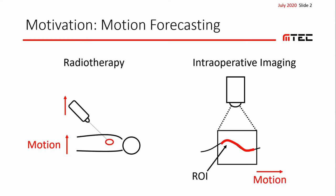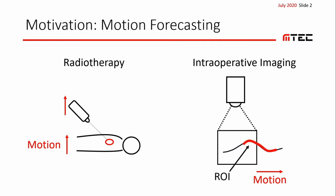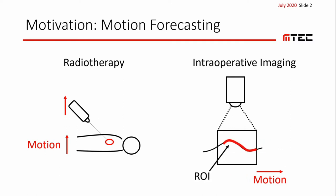Another example is intraoperative imaging, where often the field of view is limited to a few millimeters or centimeters. Therefore, the current region of interest, short ROI, can be lost quickly due to tissue or surgical tool movement, which requires constant tracking of the ROI and corresponding adjustment of the field of view.